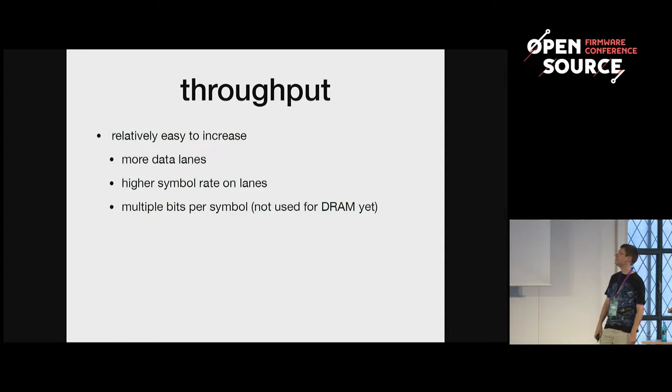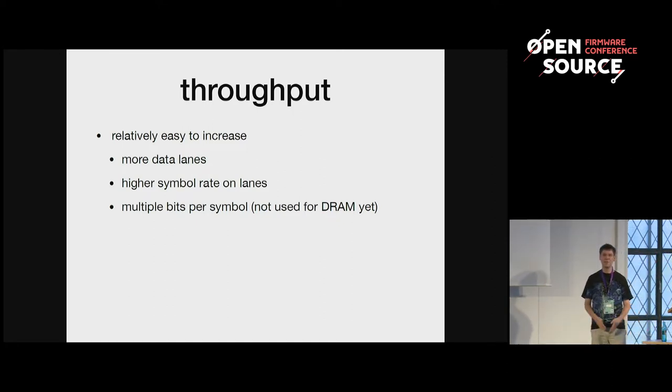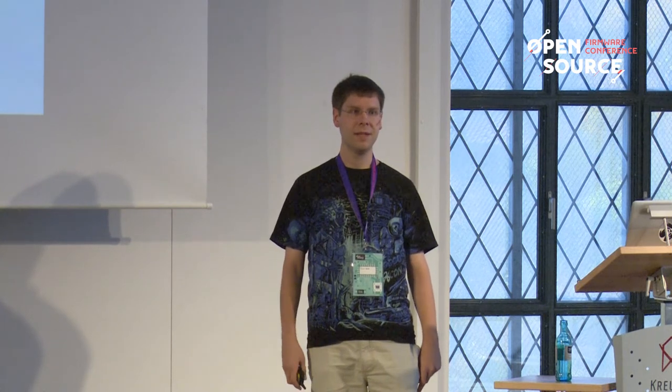Throughput is relatively easy to increase — either you can add more data lanes. On the high bandwidth memory, the number of data lanes was massively increased to, I think, 1024 data lanes. The other possibility is to increase the symbol rate per lane. That's done for the hybrid memory cube, or also for the IBM Power 8 and 9 systems with external memory buffers. Basically, they get about four times the throughput when using the external memory buffer, speaking some very fast protocol over differential lanes.